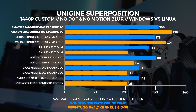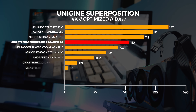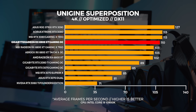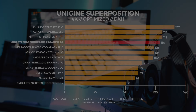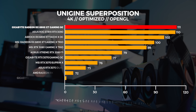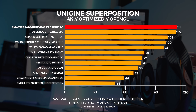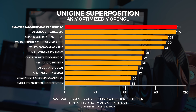At 4K in Windows, the 6900 XT comes in behind the 3080s, and in Linux at 4K we're seeing the 6900 XT come in behind the 3080 once more.